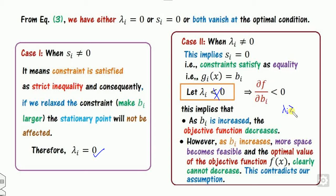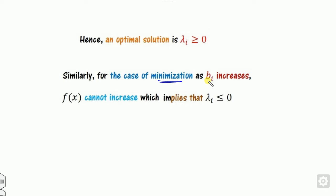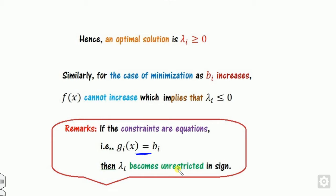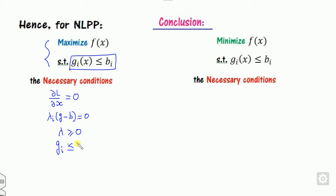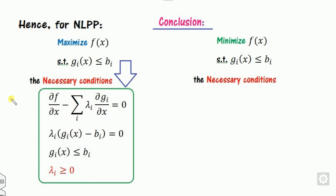Hence, we can say the optimal solution occurs at either lambda equals 0 or greater than 0. Similarly, if my problem is minimization, then bi's increase can't increase the objective, so the condition changes. Therefore, what are the necessary conditions? First: partial derivative of L with respect to x equals zero. Second: lambda i times (g minus b) equals zero. Third: since the problem is maximization, lambda i is greater than or equal to zero. Fourth: the feasibility conditions. For minimization, only the lambda sign condition changes.